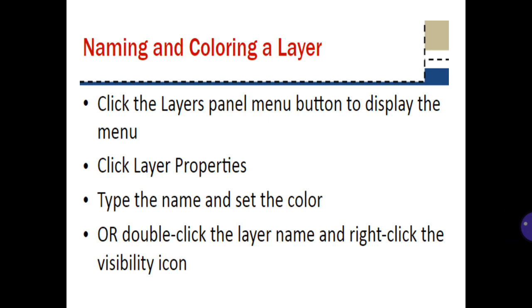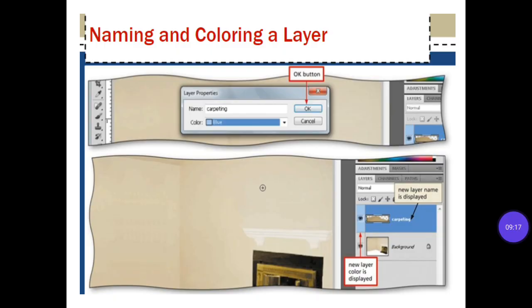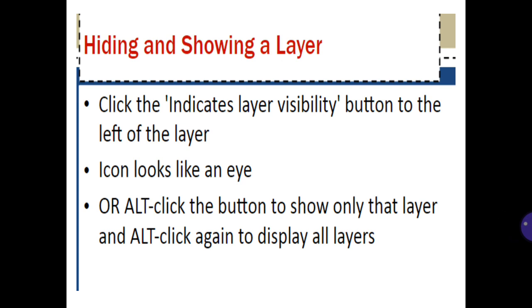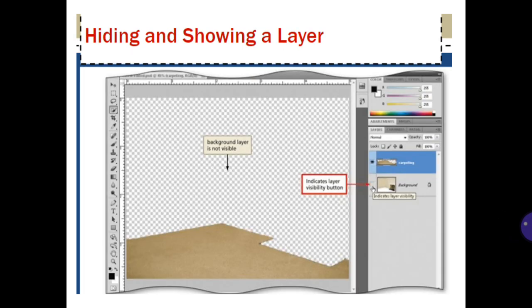Naming and coloring a layer: click Layer menu, click Layer Properties, type the name and set the color. Or double-click the layer name and right-click the visibility icon. Hiding and showing a layer: click the indicate layer visibility button to the left of the layer — the icon looks like an eye. Alt-click the button to show only that layer, and alt-click again to display all layers.